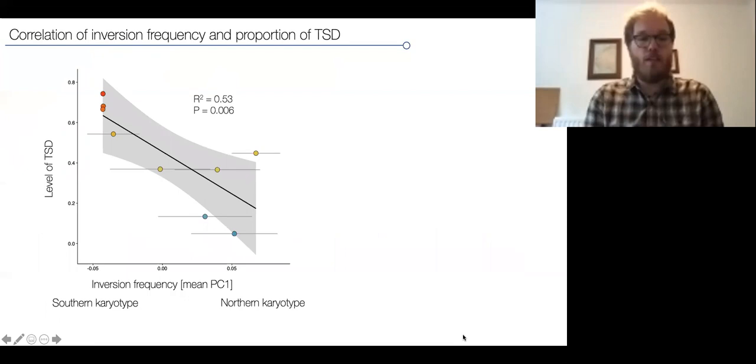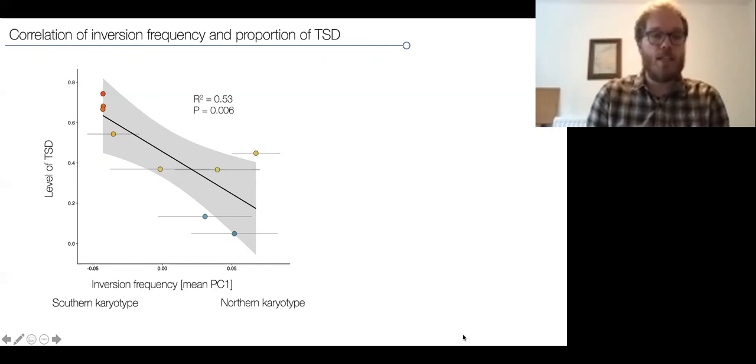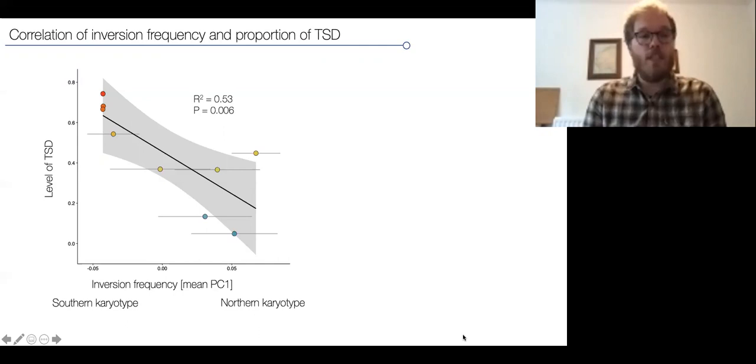This region shows a strong association with the level of temperature-dependent sex determination, but also so do other regions along the genome, for example chromosome 17 or 21. If we look more closely at this region and the frequency of this inversion in populations using a principal component approach as a proxy for the inversion frequency, we can see that populations in the south, which are most like the ancestral karyotype, that don't have the inversion show higher levels of TSD, and that the level of TSD decreases with increasing inversion frequency towards the northern karyotype, which is basically homozygous for the inversion.